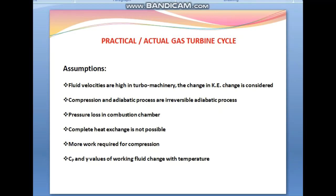Assumption four: complete heat exchange is not possible in a heat exchanger. The mass flow is assumed to be the same in spite of the addition of fuel — this is justified because bleeding of air from the compressor (around 1–2%) for cooling the turbine disc and blades is compensated by the addition of fuel. Assumption five: the values of Cp and gamma vary throughout the cycle due to changes in temperature and chemical composition. Assumption six: slightly more work than required for compression will be necessary to overcome bearing and windage friction and to drive auxiliary components.